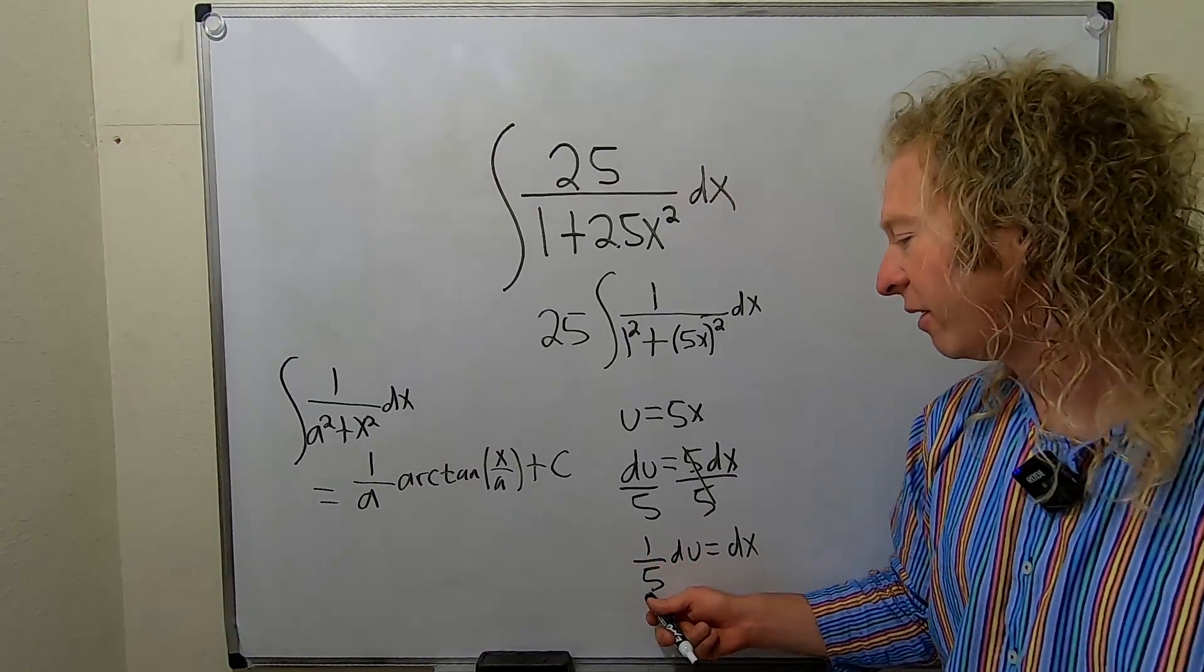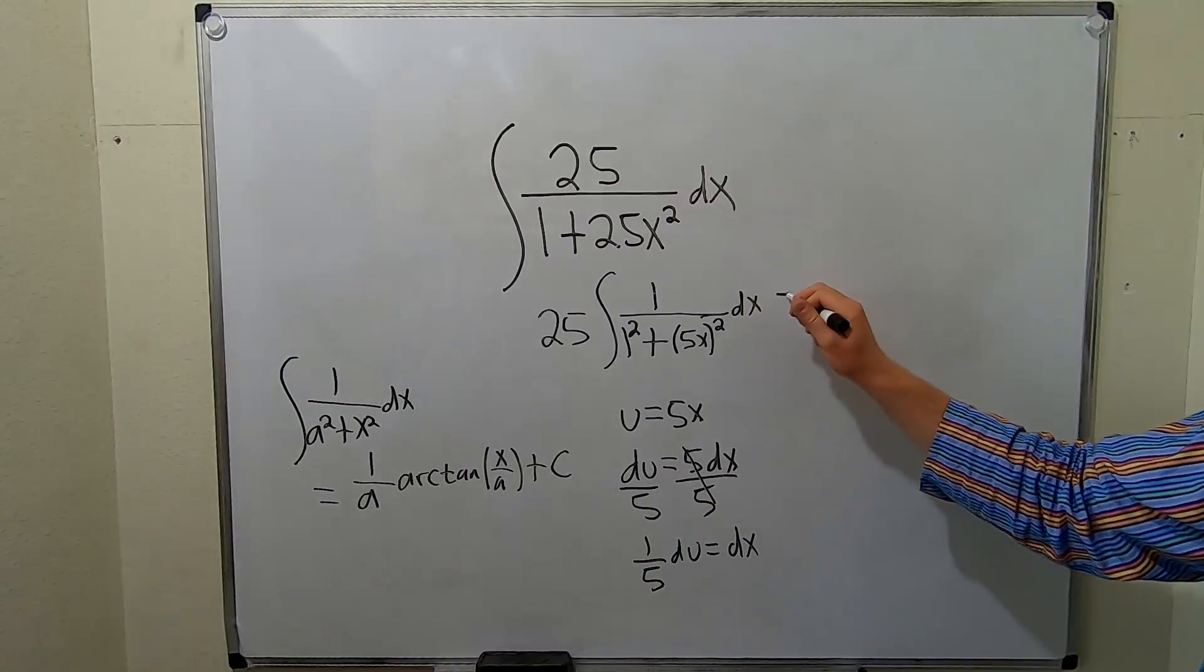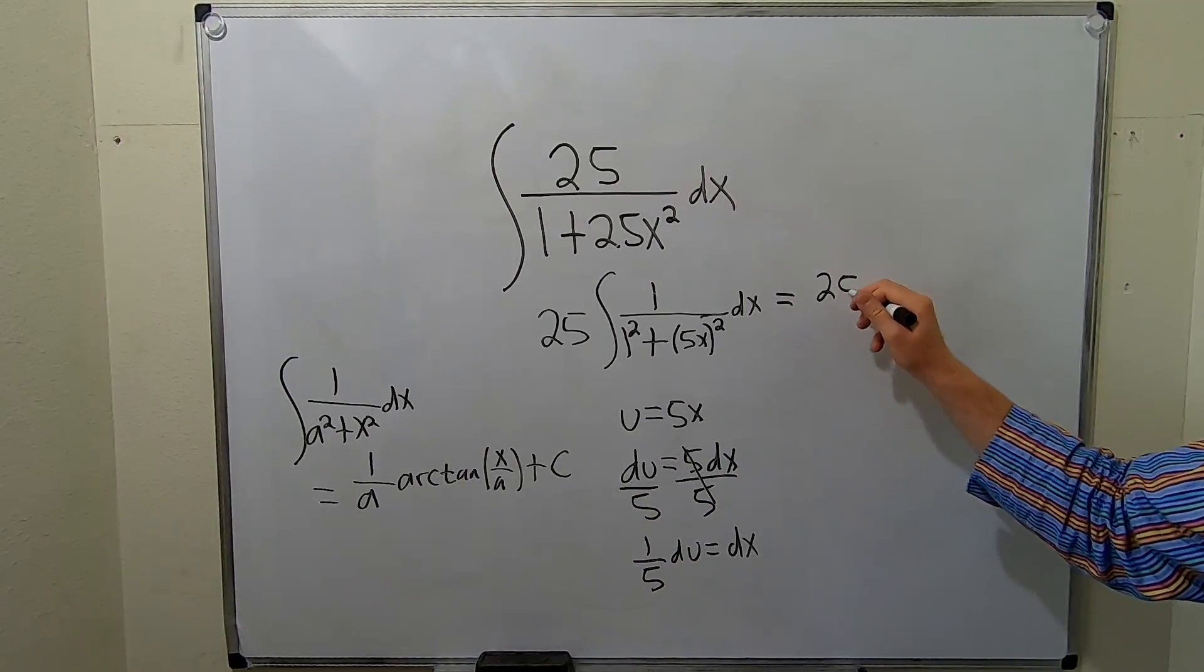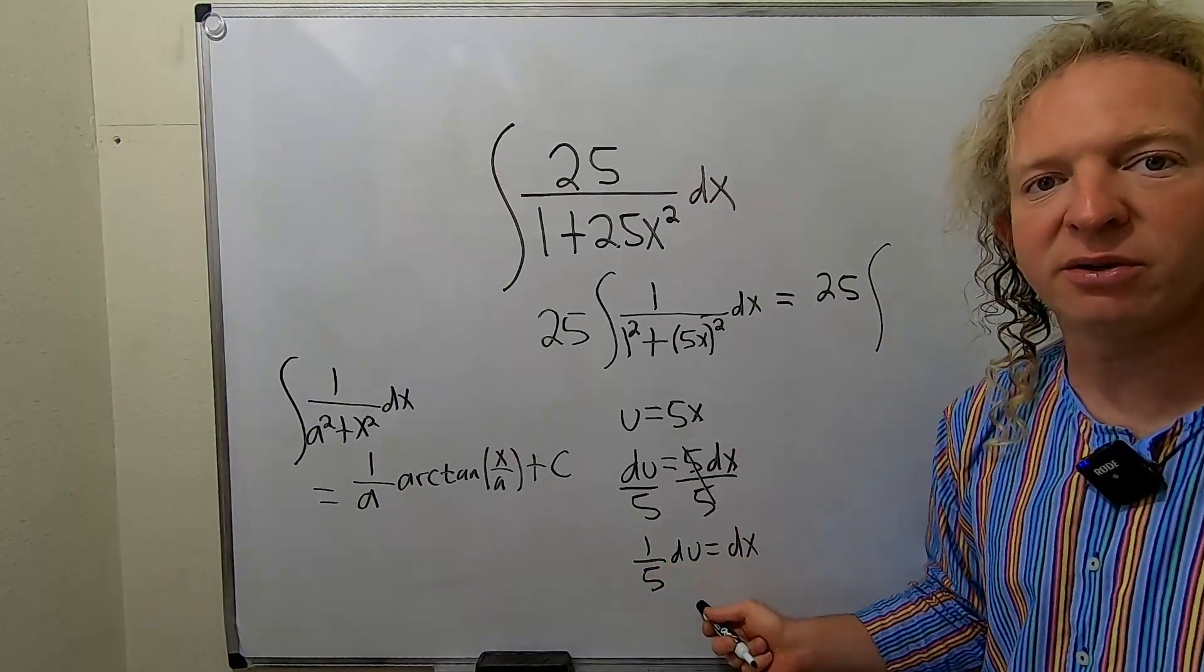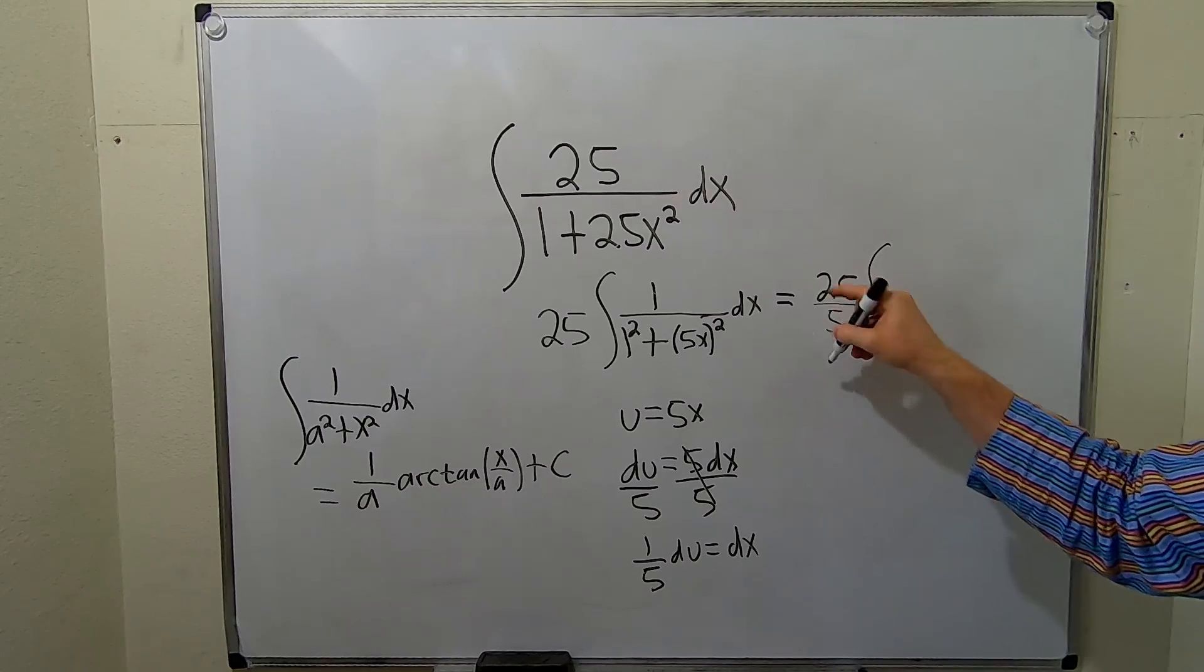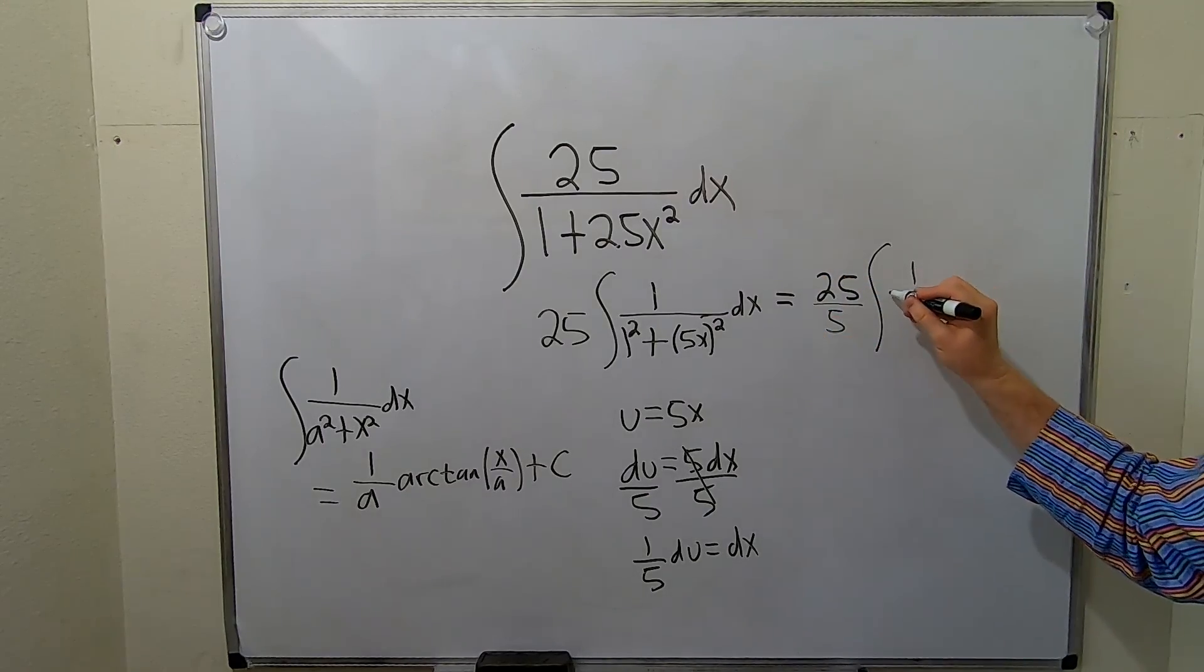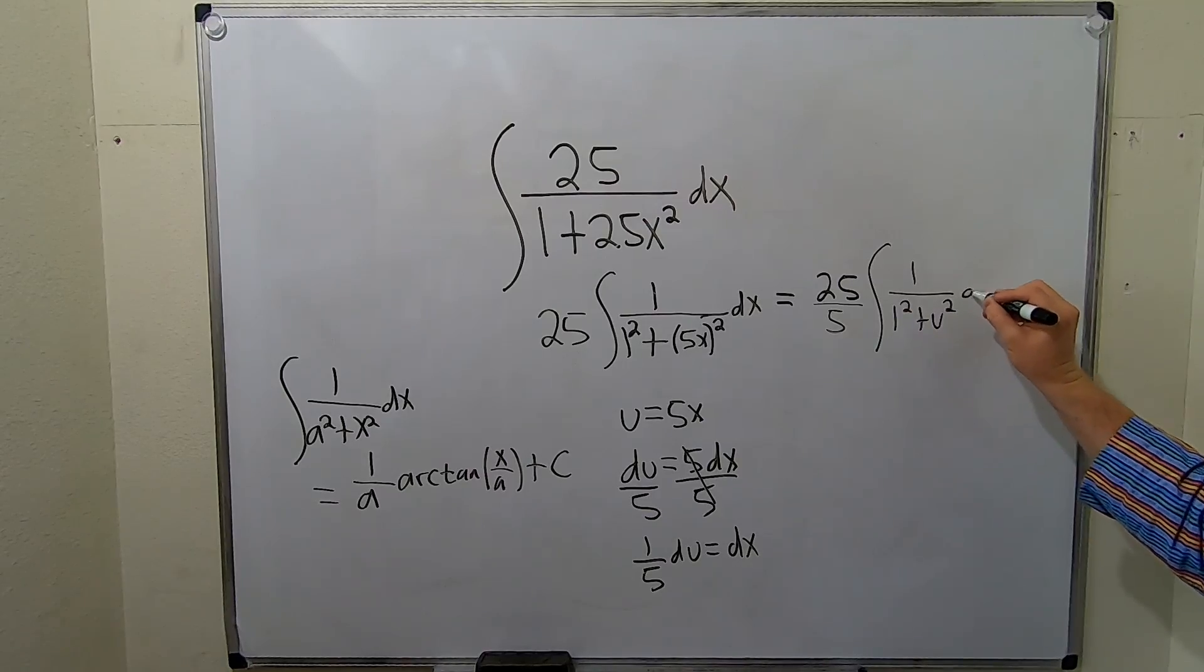So watch this. So we have 25 integral. The dx is 1/5 du. So we're going to pull out the 1/5. I'm just going to put it here like this. It's the same thing. Then we have 1 over 1 squared plus u squared du. Beautiful, right?